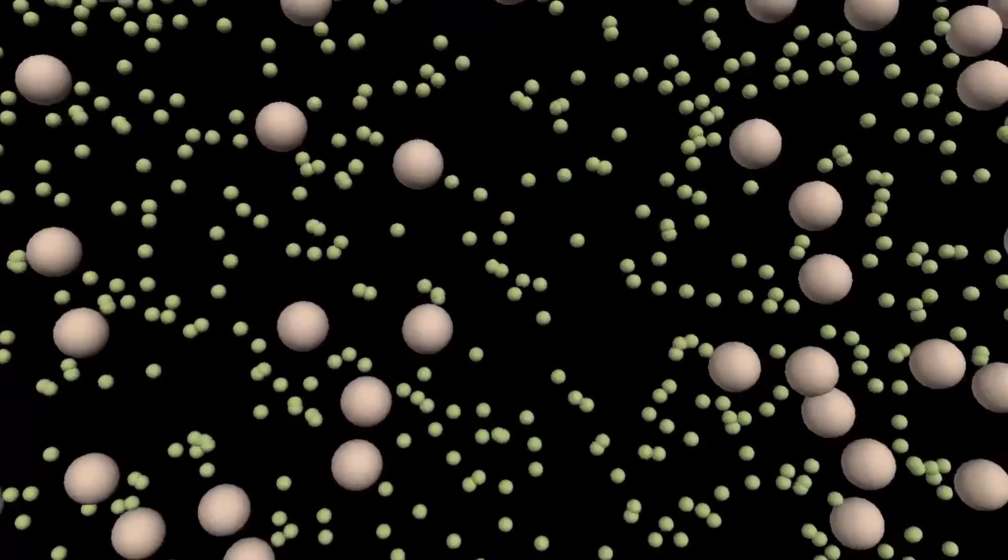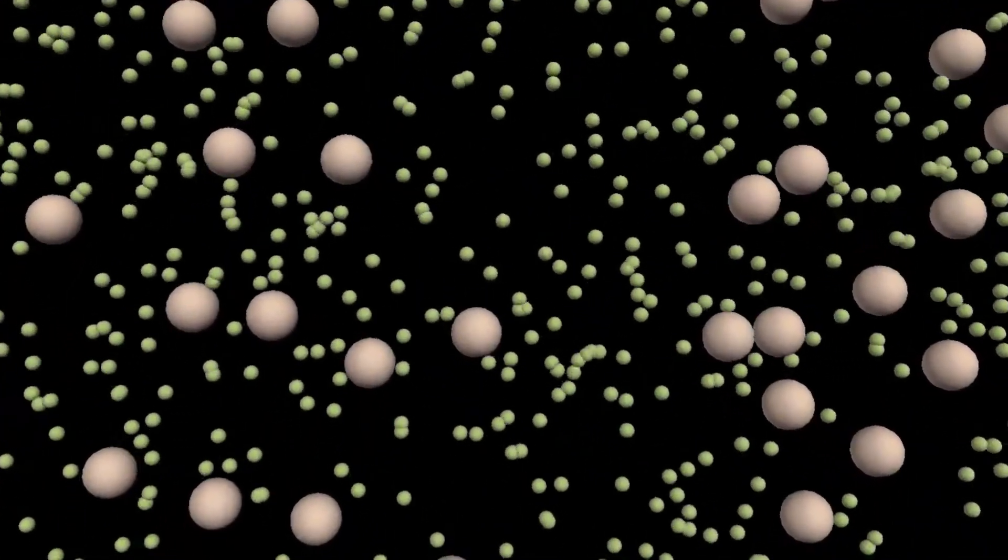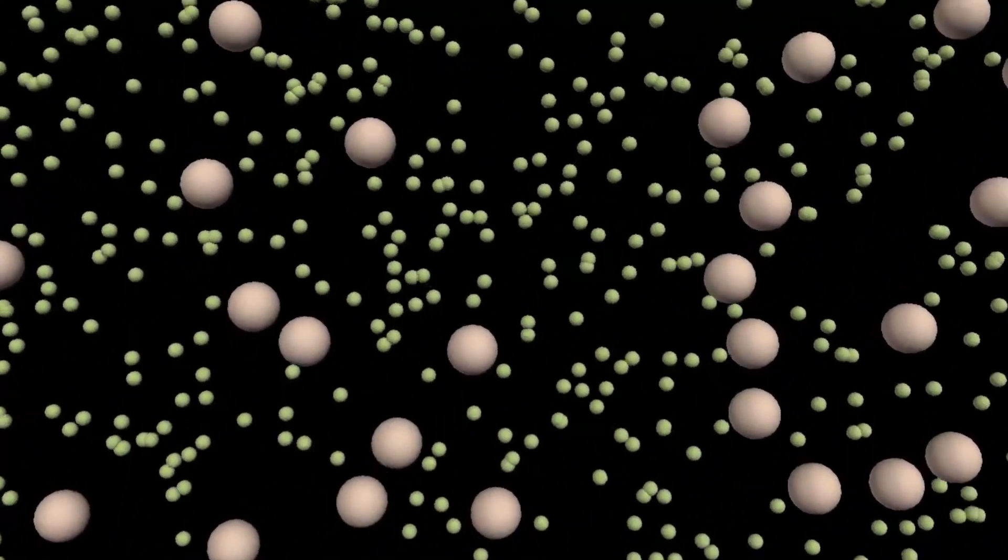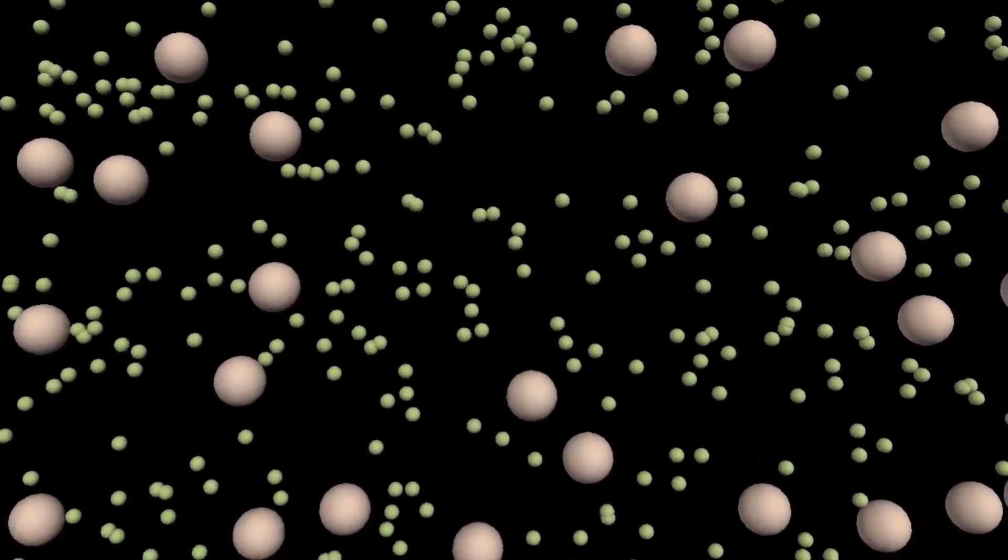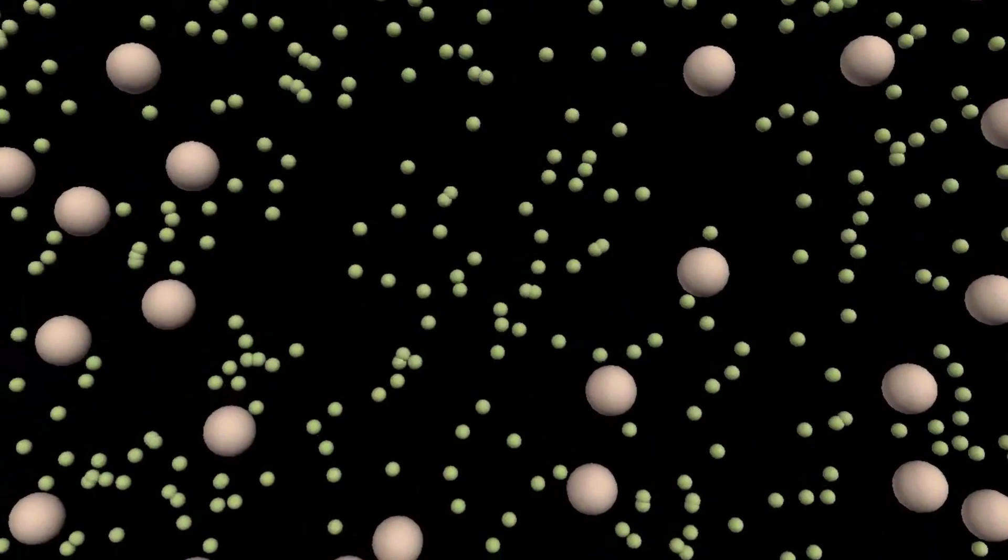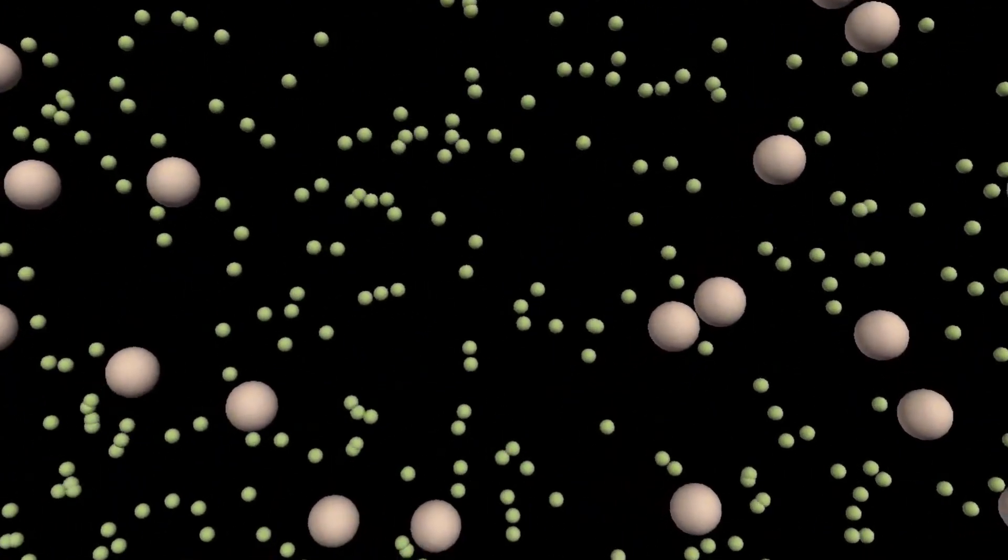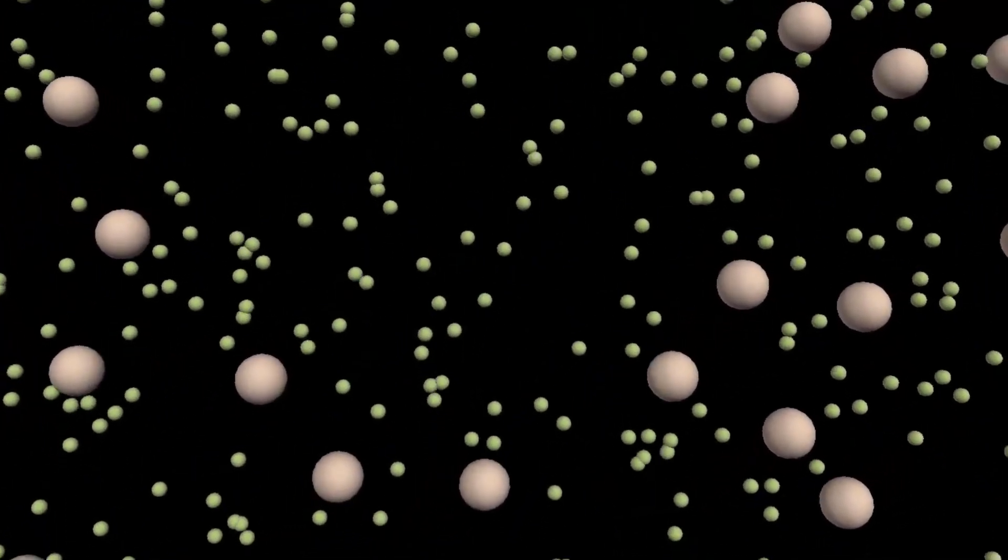Photons would bounce off these charged particles through a process known as Thomson scattering. This made the universe opaque. Light was not able to travel in a straight line before being scattered. As the universe expanded, this plasma gradually cooled.